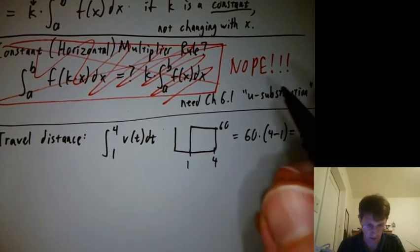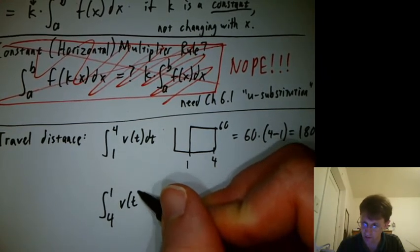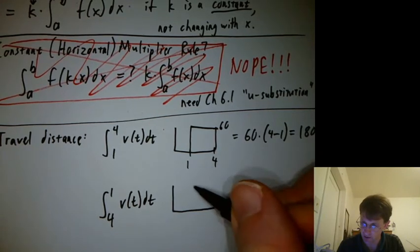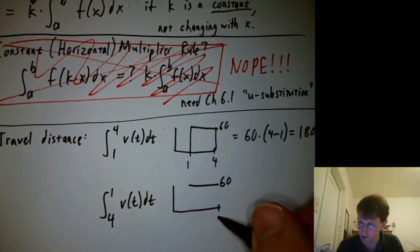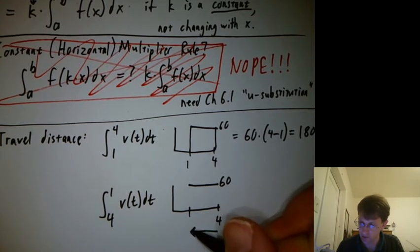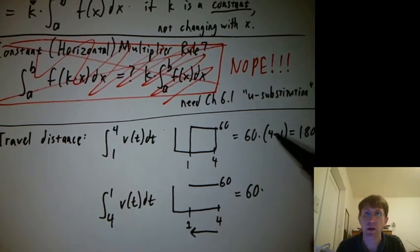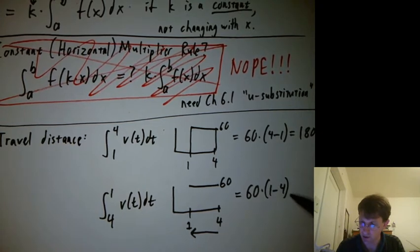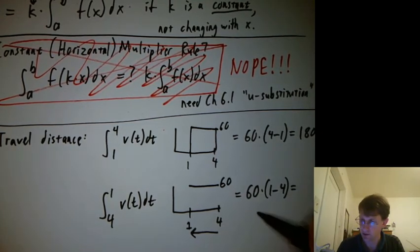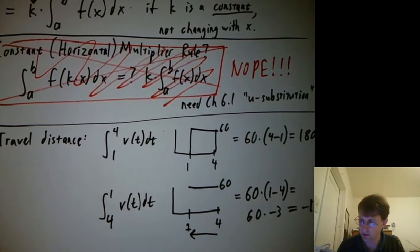Okay, so far? All right, so here's a silly question. What about the integral from 4 to 1 v of t dt? So we still have that height of 60 from our previous example, but now I'm starting at 4 and going back to 1. So the height is still 60, but how am I going to write my difference of x's? I've been writing stop point minus start point. My stop point here is 1, and my start point is 4. So this is 60 times negative 3, which is negative 180.